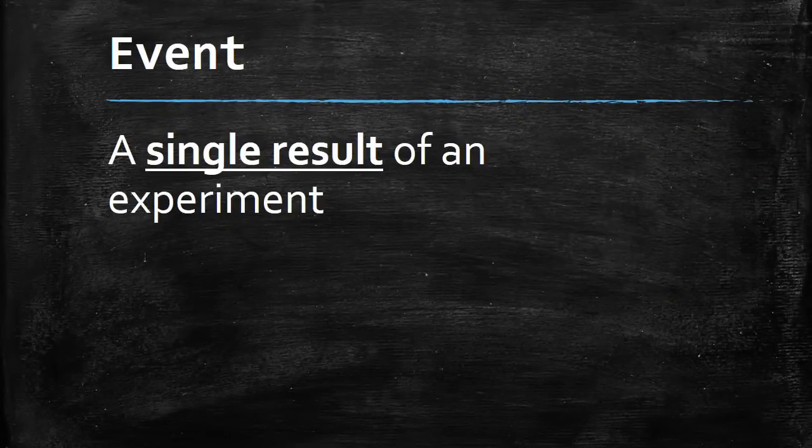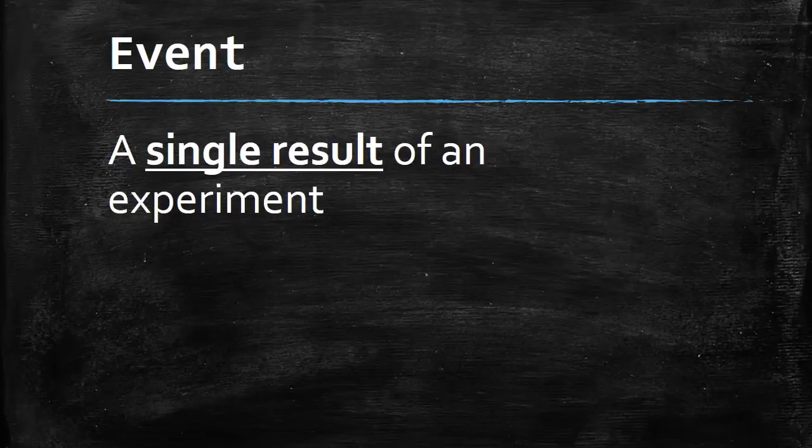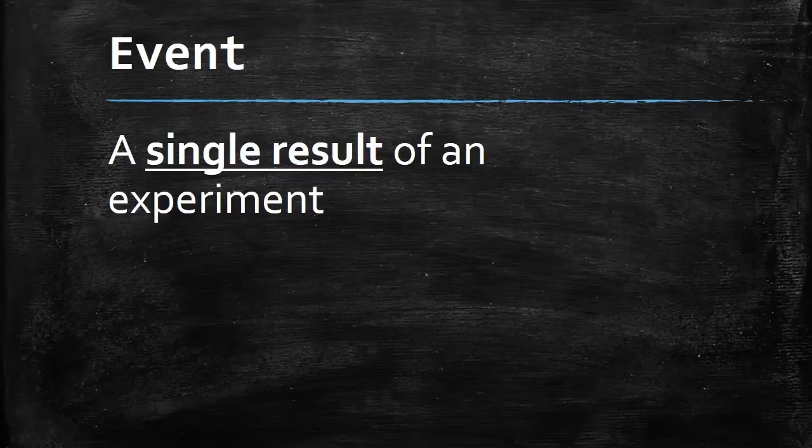When we're looking at probability, we look at what's called an event. An event is just a single result of an experiment. If you think of flipping a coin, when you get heads, that's an event. When you get tails, that's an event. If you roll a die and get a six, that is an event.